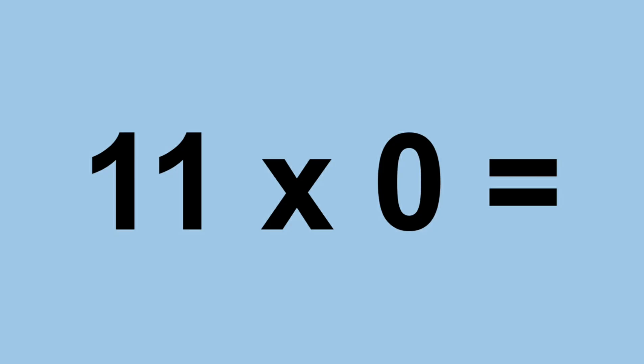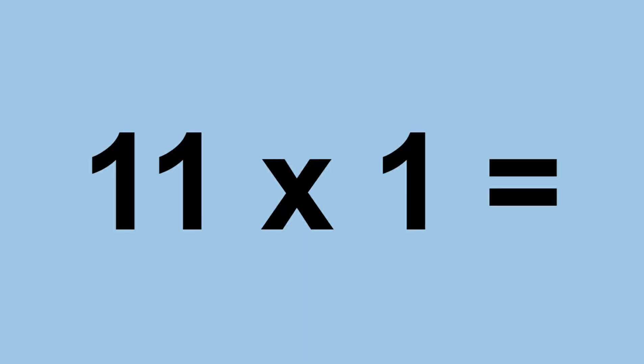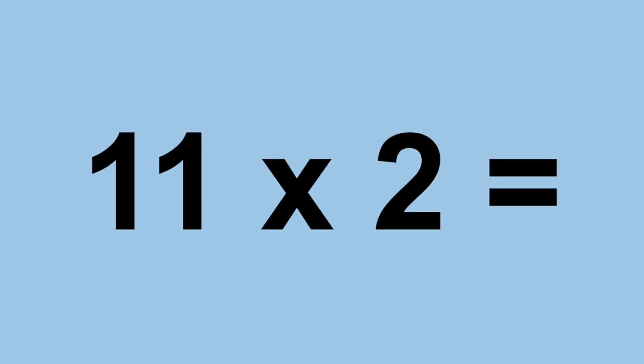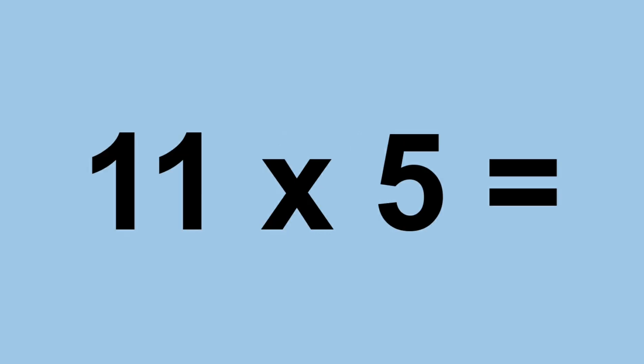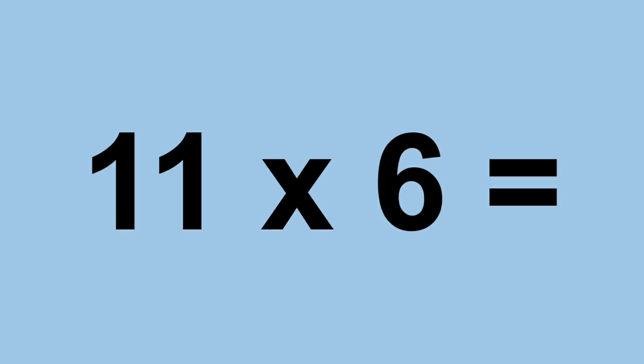Eleven times zero equals ten. Eleven times one equals eleven. Eleven times two equals twenty-two. Eleven times three equals thirty-three. Eleven times four equals forty-four. Eleven times five equals fifty-five. Eleven times six equals sixty-six.